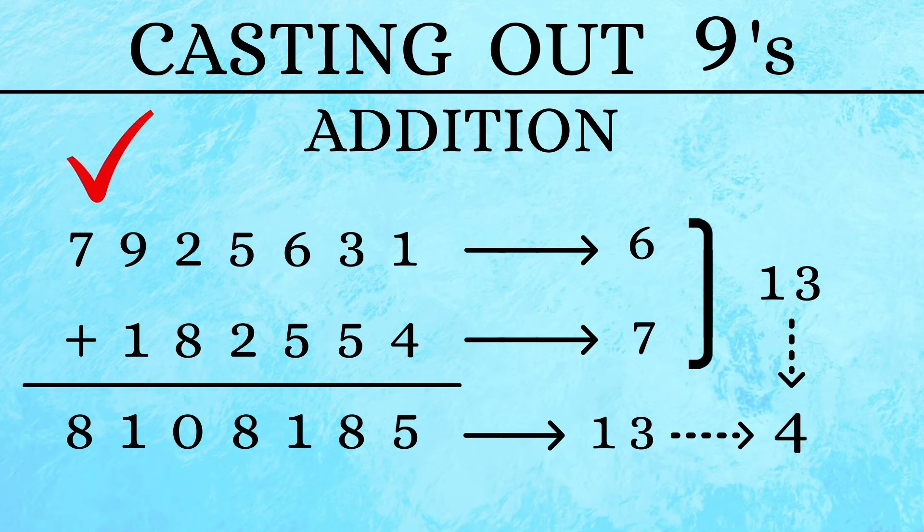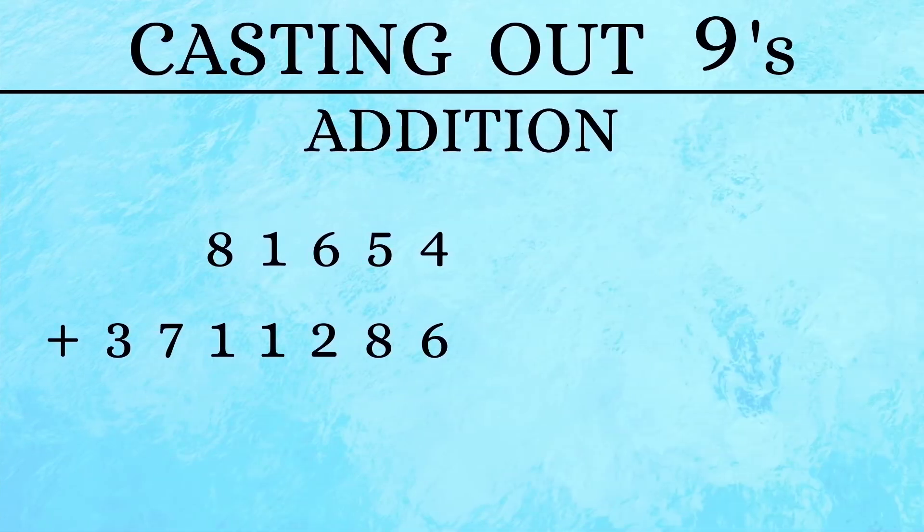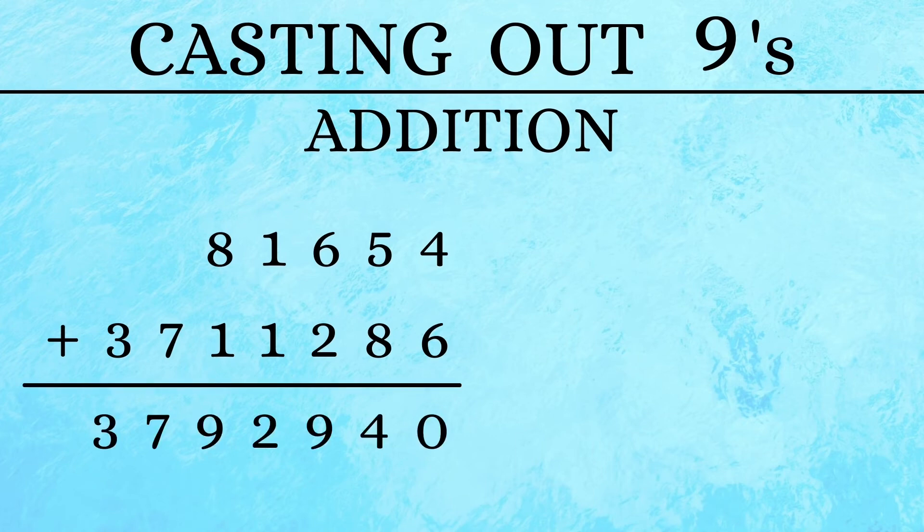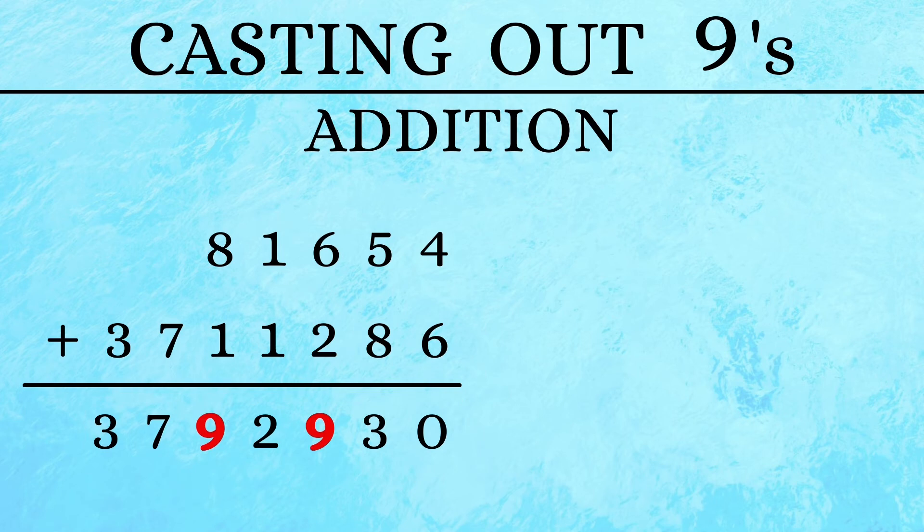Now let us see what happens if we had made a mistake. The sum of these two numbers should have been 3792940. But let us assume that instead of 4, we made a mistake of writing a 3. Let us now start checking from our answer. First we cancel out the 9's. 7 plus 2 is a 9. So we are left with 3 and 3 which adds up to give a 6.